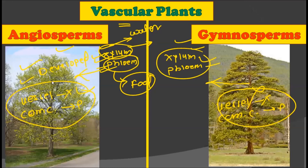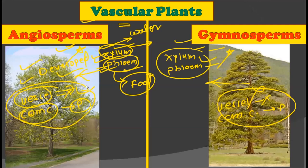So there is an important similarity as well as dissimilarity between angiosperms and gymnosperms regarding vascularity. Both contain xylem and phloem, but the xylem and phloem of angiosperms are more differentiated. Vessels in xylem and companion cells in phloem are well developed in angiosperms, while these are absent in gymnosperms.